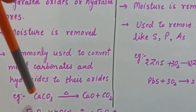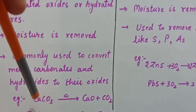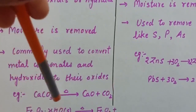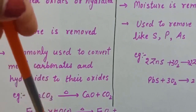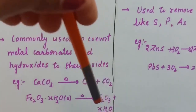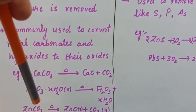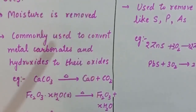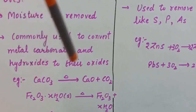For example, calcium carbonate when heated converts to calcium oxide and CO₂ gas is released. Similarly, the hydrated oxide of iron when heated converts to its oxide and water molecules are removed. Zinc carbonate when heated converts to zinc oxide and CO₂ gas is released. This is how we convert metal carbonates, hydroxides, or hydrated ores to their oxides.